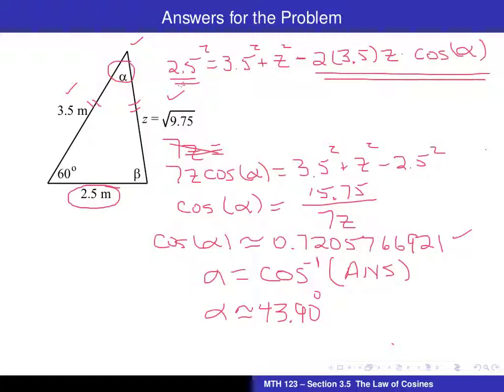So, now we actually have the value for two angles. And we can use the fact that the three angles, the measures of the three angles, have to add to 180 degrees. But sometimes I like to use that as a check of my work. And I think that's a good idea that we should always strive to do. So, what I would like to have you practice with here is use the law of cosines to try to determine the measure of the angle beta. And pause the screencast and work on that for a few minutes and see if you can find the measure of the angle beta.